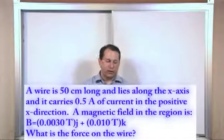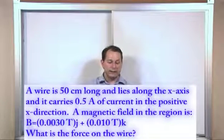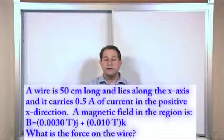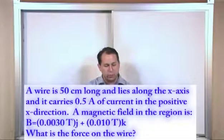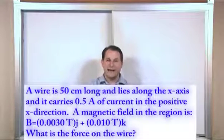So in this case though, we have a vector, an actual vector, and it lies in j and k which is y and z directions for the magnetic field. And we're actually also given a vector for the wire because we're told the wire is 50 centimeters long, so we know the length, and we know it's along the x-axis.